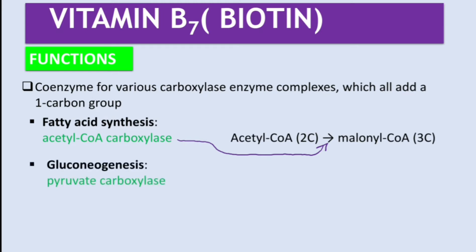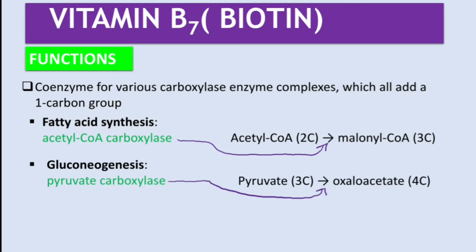The second process is gluconeogenesis — the formation of glucose from non-carbohydrate sources. Here, pyruvate carboxylase, which is essentially a reverse step of glycolysis, acts on the conversion of pyruvate (three carbons) into oxaloacetate (four carbons).